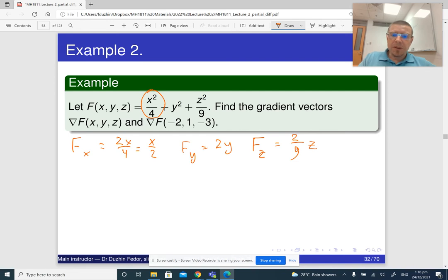So the gradient vector, nabla f, is just these three things put together: the vector whose first entry is x over 2, second entry is 2y, and third entry is 2 over 9 z. We can also rewrite it as x over 2 i plus 2y j plus 2 over 9 z k.